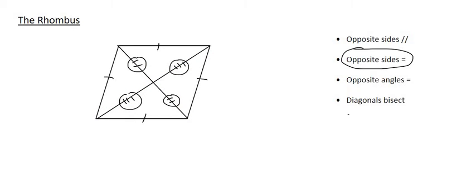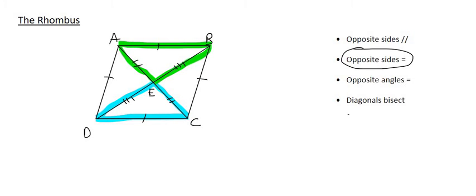But something really cool does happen in a rhombus. Have a look at all four of these triangles — they are actually all going to be the exact same as each other. For example, have a look at these two triangles: they're going to be congruent because they have three sides that are equal to each other. This side is the same as that, this is the same as that, and that is the same as that. So that would be congruency due to side-side-side.